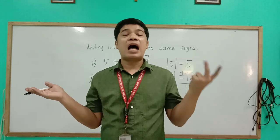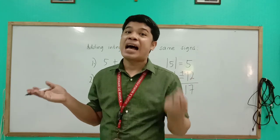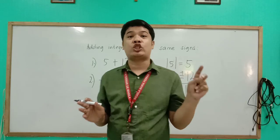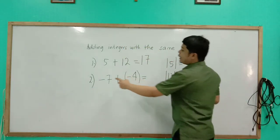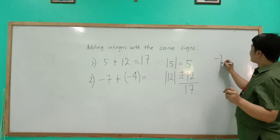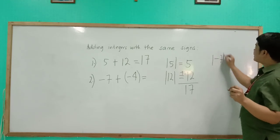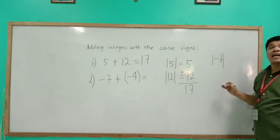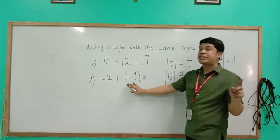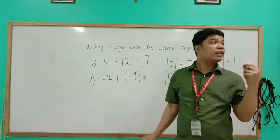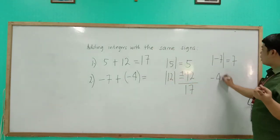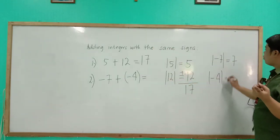We are going to find the absolute values of the two given integers. The first integer is negative 7, and its absolute value is just 7. Next, the absolute value of negative 4 is also 4.